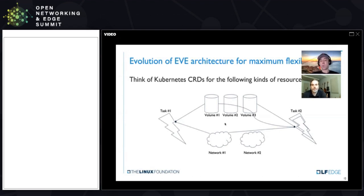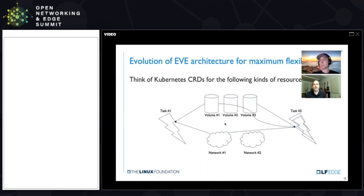Finally, once you have volumes and networks, there has to be something that actually uses them. That something is a runnable entity, and any runnable entity on EVE gets represented as a task. Tasks are basically either containers, VMs, or unikernels that consume volumes and networks and do something useful. They also obviously consume CPU and RAM, but CPU and RAM are kind of table stakes. That's the whole composition of EVE.